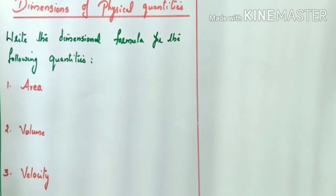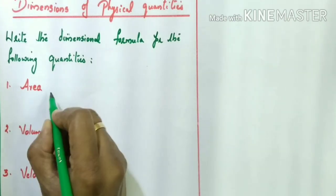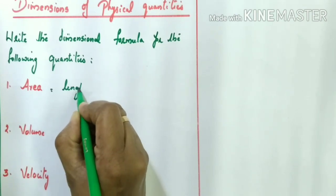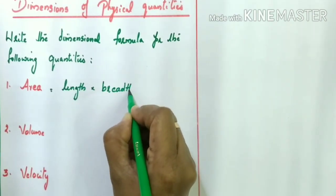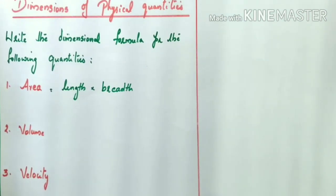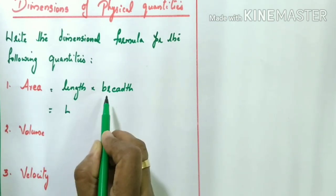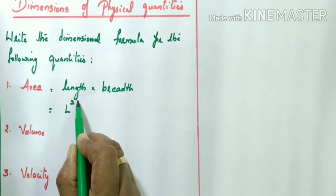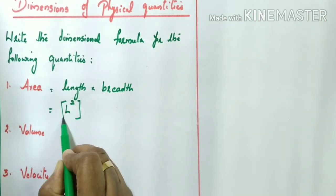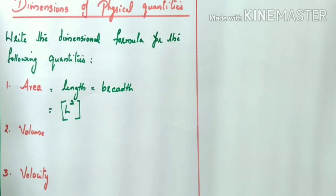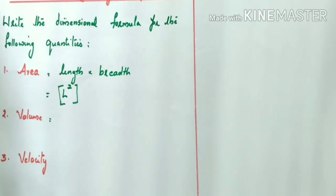Now we can write the dimensional formula for the following quantities. First one: area. We know area is equal to length into breadth. Length and breadth have the same dimension — the dimension of length is L, and breadth also represents a distance, so its dimension is also L. Therefore, the dimensional formula for area is L × L, which is L squared. So the dimensional formula of area is [L²].